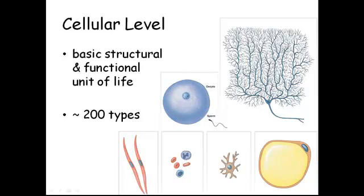If you get the chemicals in the right arrangement — and by the way, scientists haven't figured out exactly how to do this yet. Scientists know what chemicals make up a cell, but they can't just put them in a beaker and mix them up and get a cell. The cell is alive. It is what we call the basic structural and functional unit of life. Anything less than a cell is not alive. Even though there are only four types of tissues, in the human body there are about 200 different types of cells.